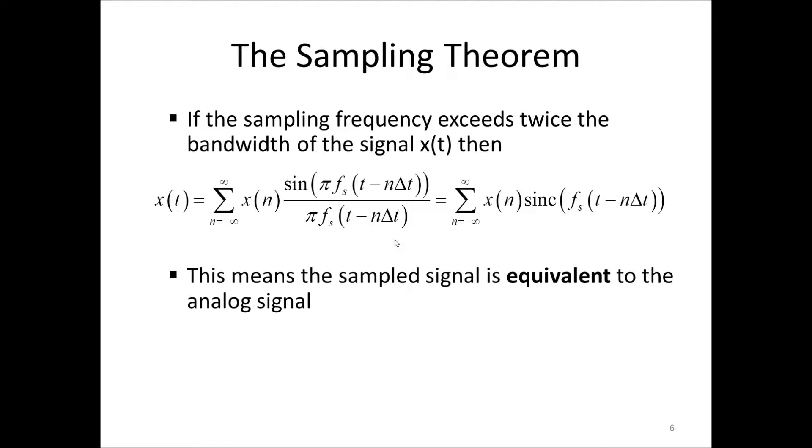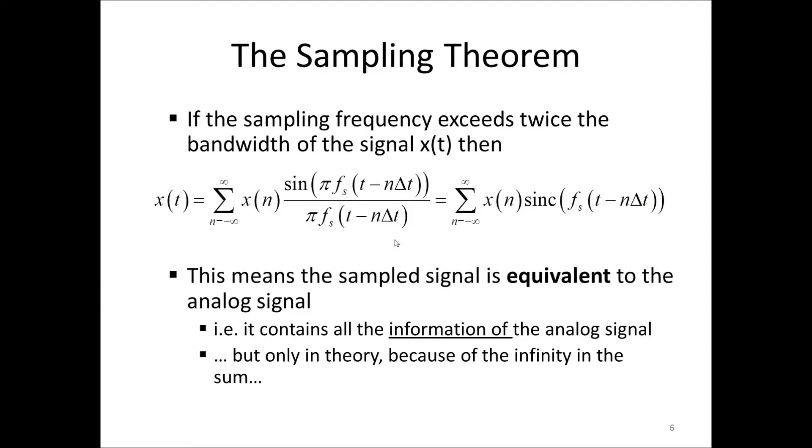For now, we will just note a few important things. First of all, this means that the sample signal is equivalent to the analog signal, which means that it contains all the information of the analog signal. So, from the sample signal, we can recompute any analog value, x, at any analog value of t. But, of course, this is only true in theory, because there is infinity in the sum. So, in real life, we always have a truncated, a limited amount of data in x of n, and there we will get some approximation.